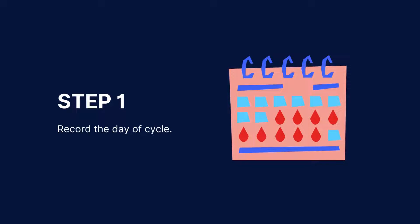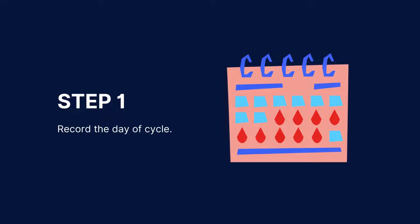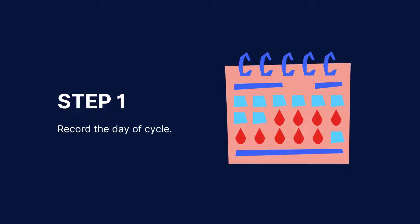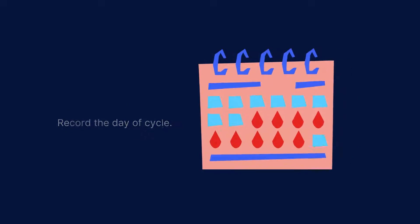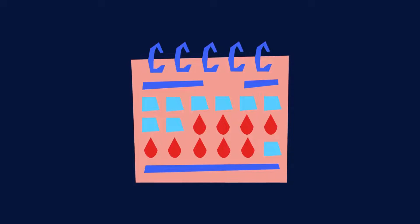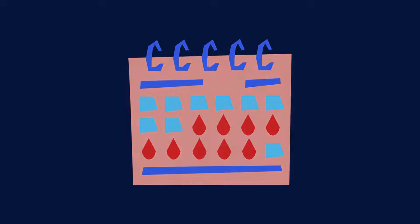Firstly, record the day of the cycle. The first day of your last menstrual period is considered day 1. Write down the number of days since your last menstrual period in the day of cycle column.